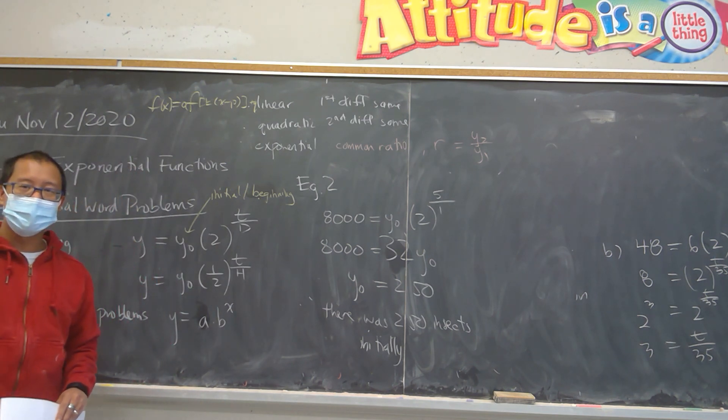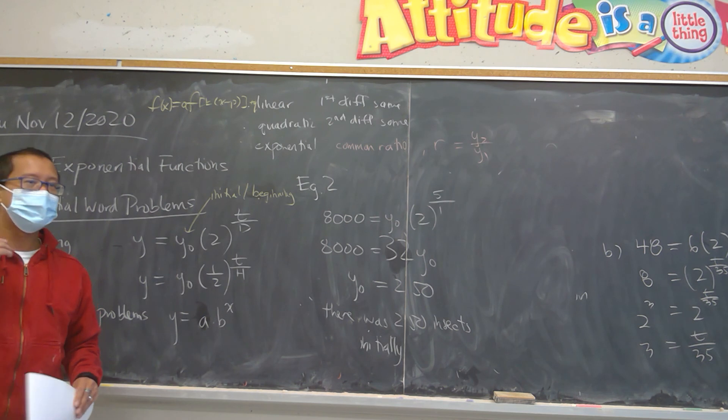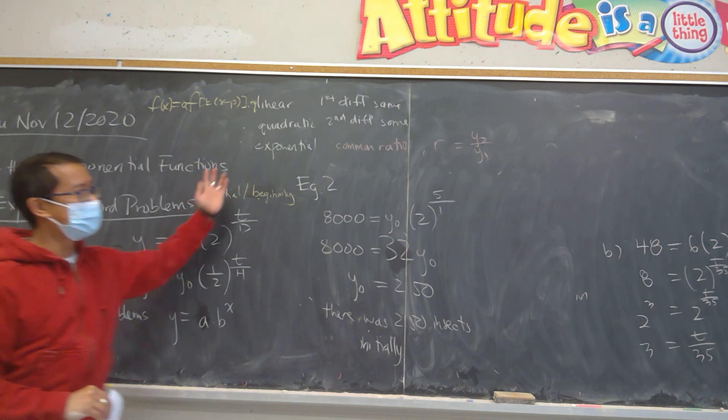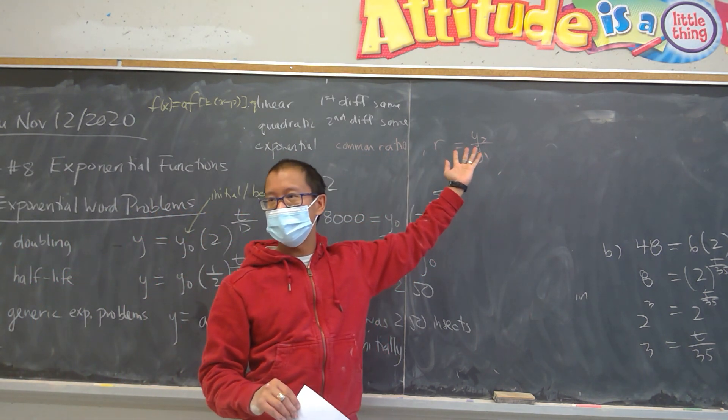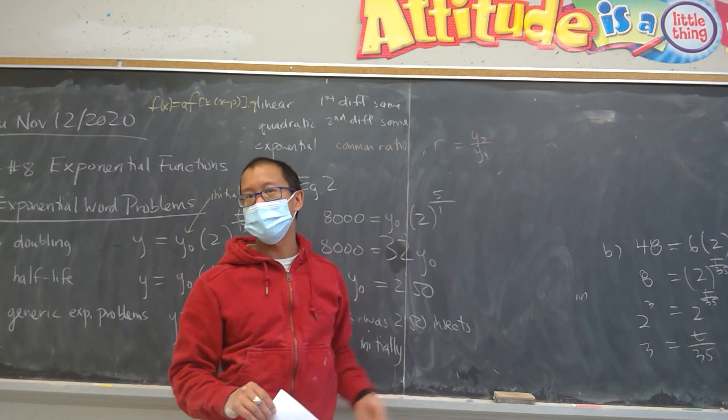And if you were to do the table of values, after the first month, and the second month, and the third month, and the fourth month, with the population doubles, you would see that the common ratio would show that that pattern is the same and it is exponential.